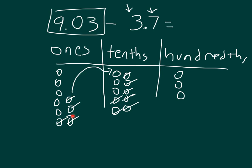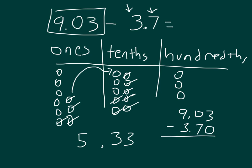That leaves us with 5 ones, 3 tenths, and 3 hundredths. Using the traditional algorithm: 3 minus 0 is 3; 0 minus 7 — can't do it, so 9 becomes an 8, 0 becomes 10; 10 minus 7 is 3, and 8 minus 3 is 5, with the decimal point coming straight down. So that's how you can use a place value chart to help you when subtracting with decimals.